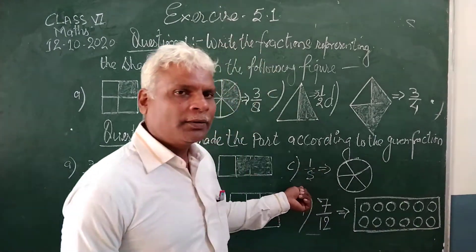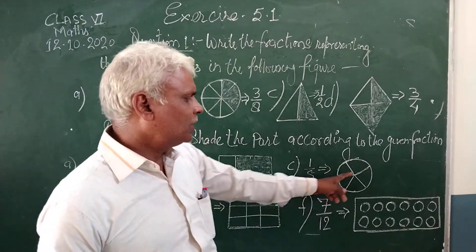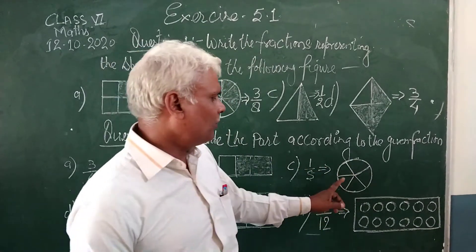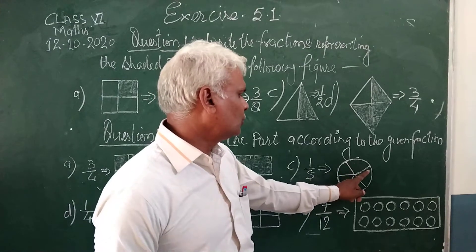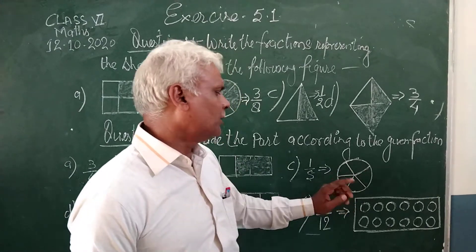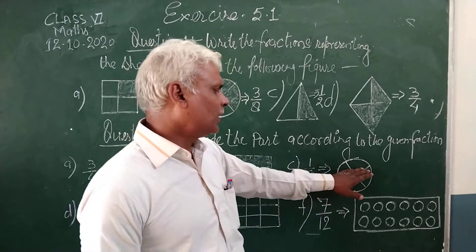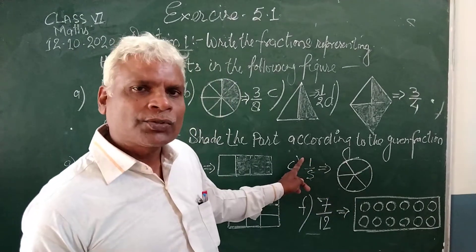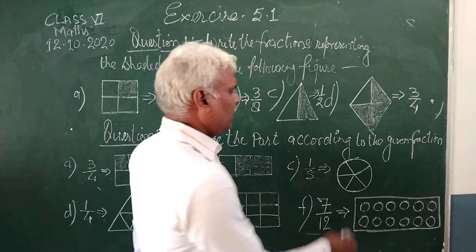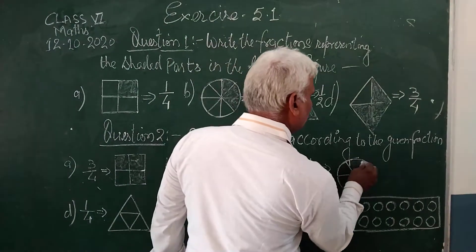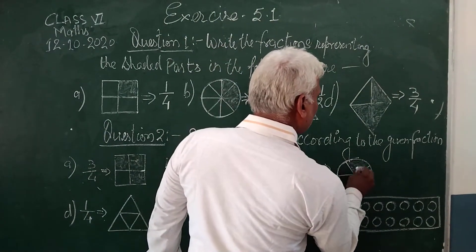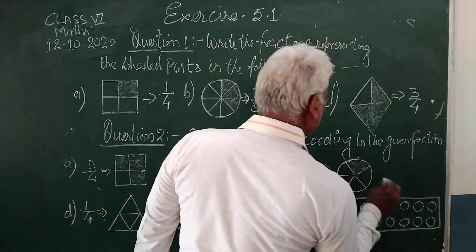Here is 1 upon 5. The denominator part means this figure is divided into 5 equal parts: 1, 2, 3, 4, 5. Out of all 5, one part is to be shaded. Shade 1 part here.